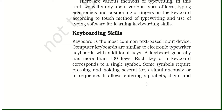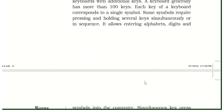It allows entering alphabets. For example, we use Alt+F or Ctrl+V, Ctrl+C — these are shortcut keys. You press the shortcut key combination, such as pressing Ctrl and C or Ctrl and V. These are all shortcut keys used on keyboards. It allows entering alphabets, digits, and symbols.